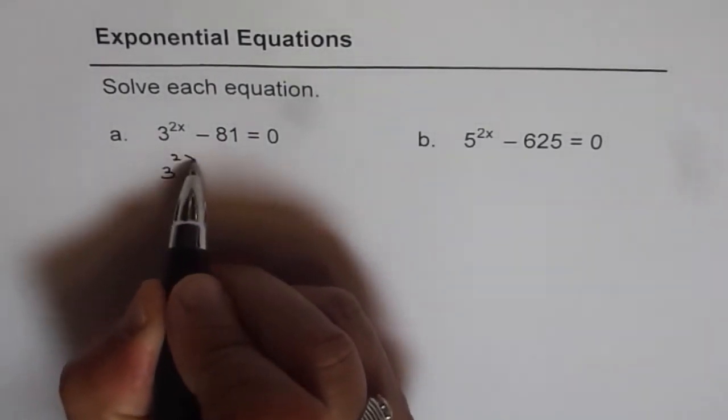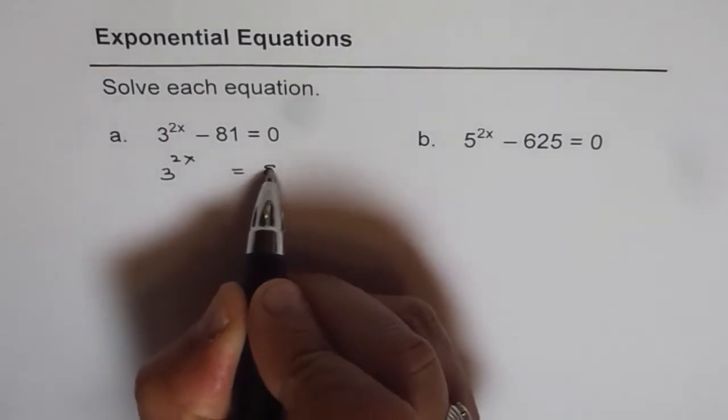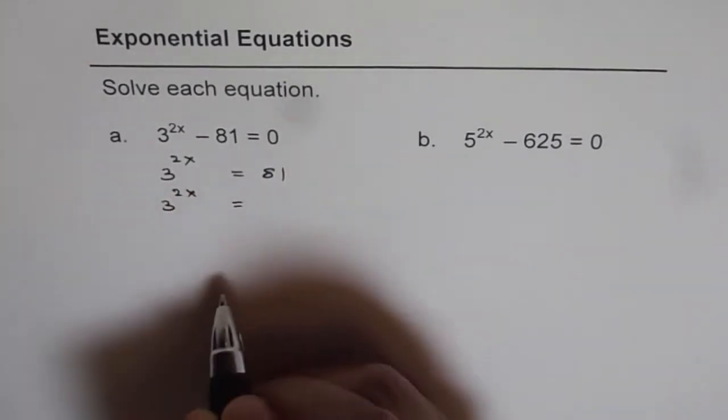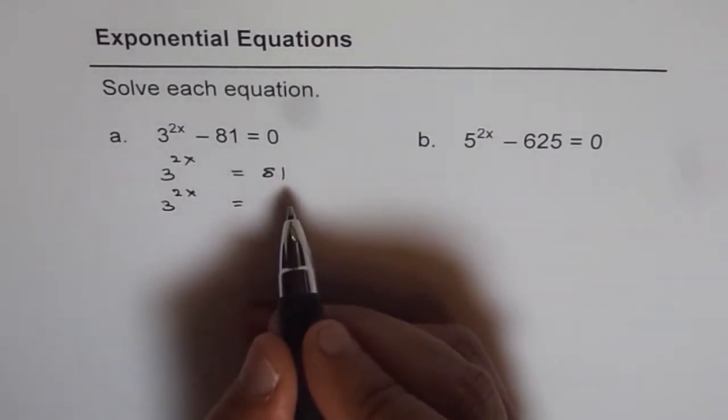So we get 3 to the power of 2x equals to 81, and now we need to write 81 as a power of 3.